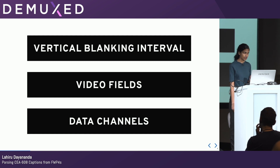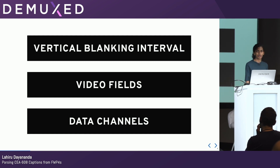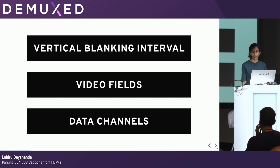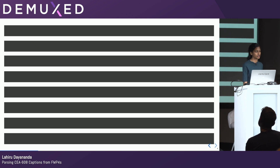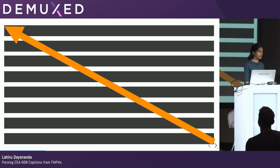In the height of popularity of analog TVs, cathode ray tubes were used to trace parallel lines across a phosphor-coded surface. This is called a raster scan. The vertical blanking interval, then, is the time it takes to go from the end of a field of frame back up to the top of the next field of frame that has to be drawn.